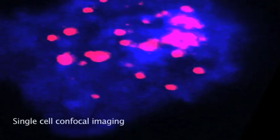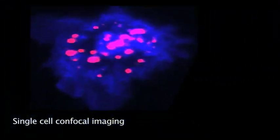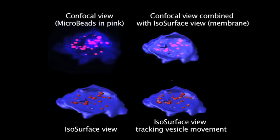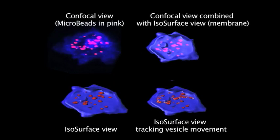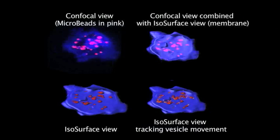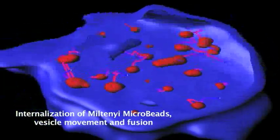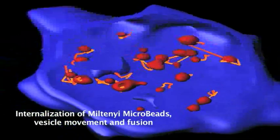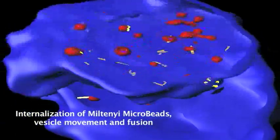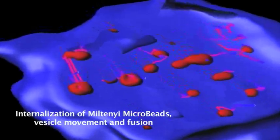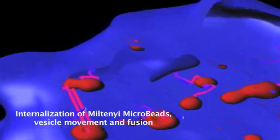Let's focus on a single cell. The top left is the confocal image, while the top right is a mix of the confocal image of the beads and isosurface view of the cell membrane. The bottom left is the isosurface view, and the bottom right is the isosurface view tracking vesicle movements. We will now zoom in on a cell to see the beads being internalized and vesicle movements, showing internalization of the Miltenyi microbeads along with vesicle movement and fusion.